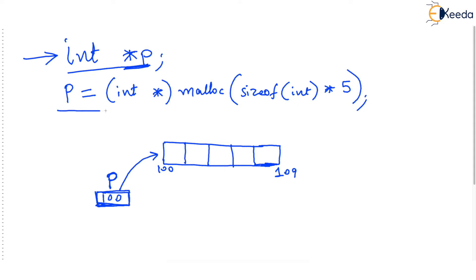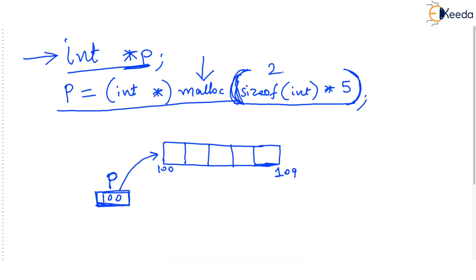Now have a look at the call to malloc which we were seeing in the previous video. You can start reading from malloc — malloc means memory allocate — and how much memory we want to allocate is written in the bracket after malloc. We have written size of int multiplied by 5. Just imagine every integer on my computer consumes 2 bytes, so size of int on my machine is 2 bytes. Then 2 multiplied by 5 means a total of 10 bytes will be allocated by malloc — a continuous sequence of 10 bytes, let's say from address 100 to 109.